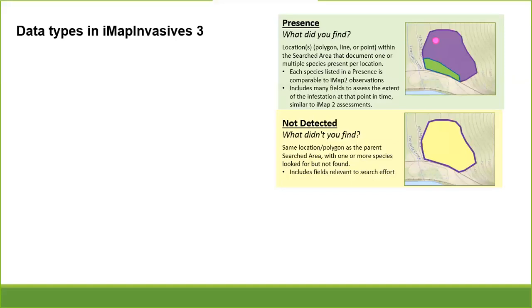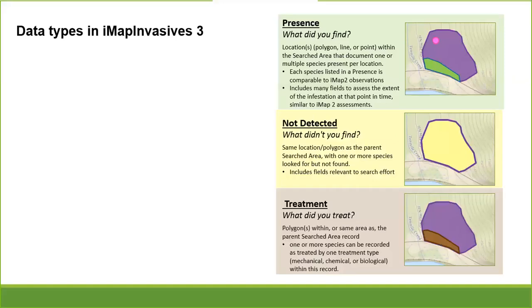There are different data fields relevant to your search effort, like the time spent searching. And then of course the treatment record — this is probably the one that's most similar to what we had in IMAP2. You can delineate the area that you treated with a polygon and then add a lot of details about what you treated and how you treated it.